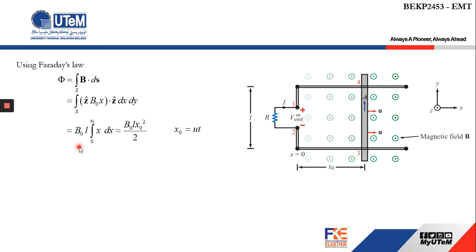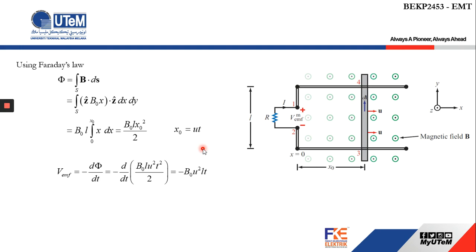Replacing x_naught with ut gives the flux as B0 l u² t² over 2. Differentiating the flux over time using Faraday's law and applying the negative sign for Lenz's law: d/dt of t² gives 2t, the 2 cancels, and we get negative B0 u² lt — the same result as the motional EMF equation, confirming both methods yield the same answer.